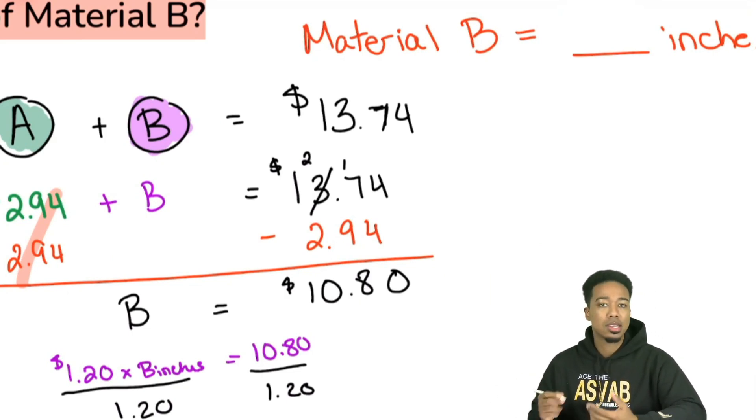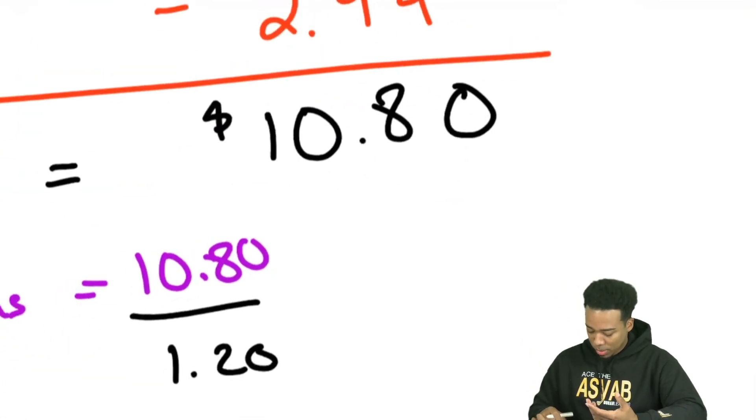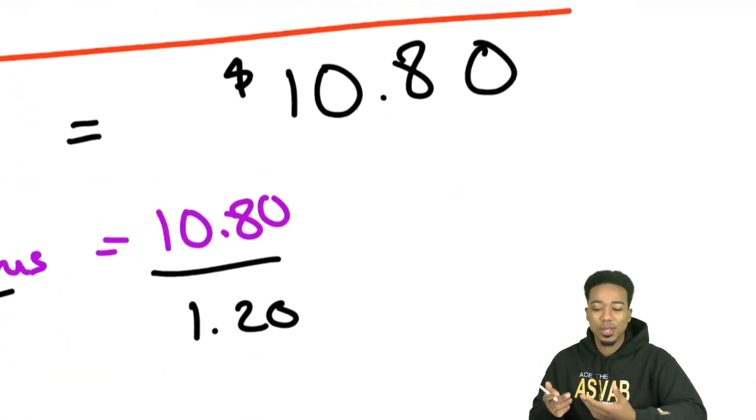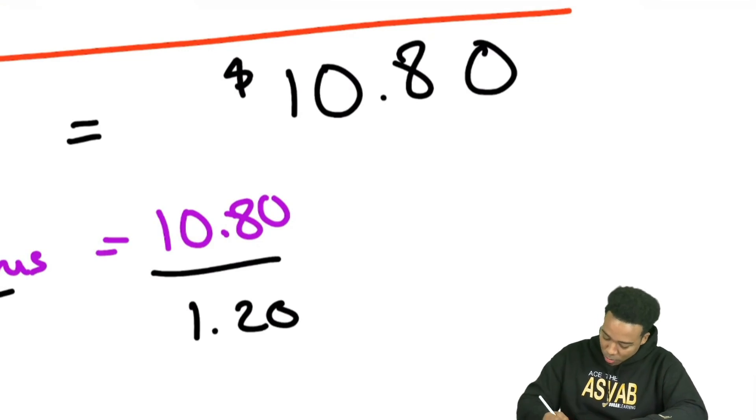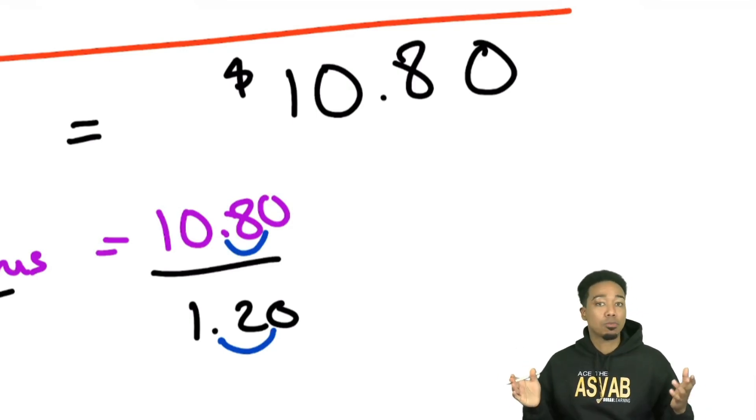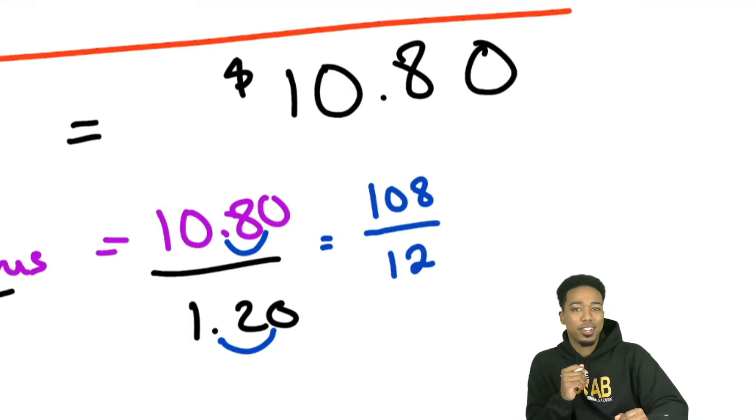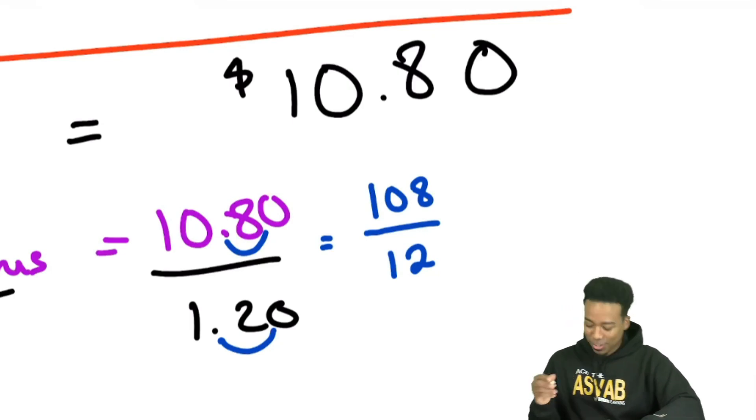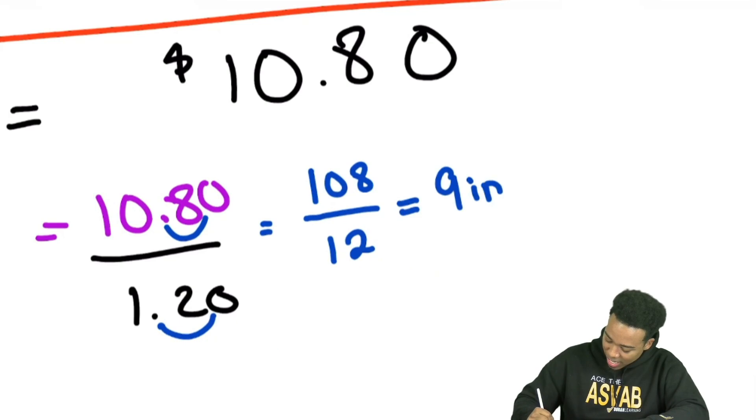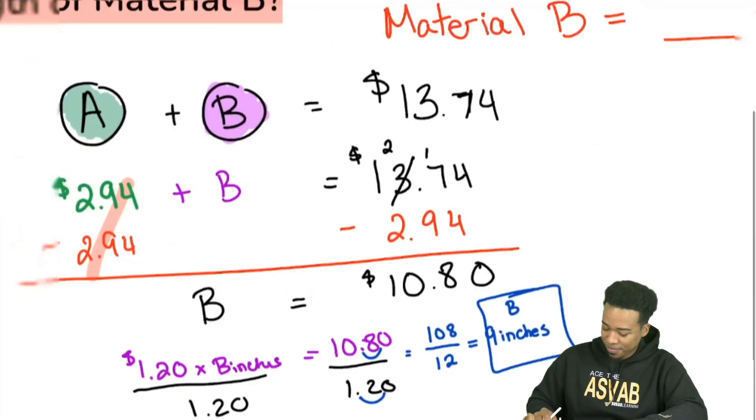We'll say $1.20 into $10.80. And one little trick that we can use is since we don't want to divide by a decimal, what I can do is move each decimal over by the same distance. I move it over once in the bottom, once in the top. That's the same thing as multiplying by 10 on top and bottom. So we are essentially saying this is the same as 108 divided by 12. And that's actually a lot easier to look at. 108 divided by 12, that's 9. And so there we are. This is going to equal 9, and we were looking at the length in inches. So material B is 9 inches.